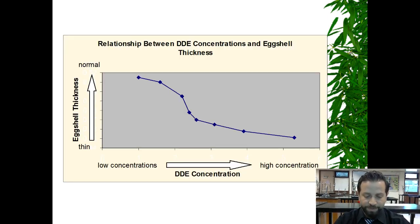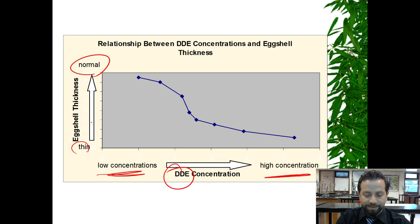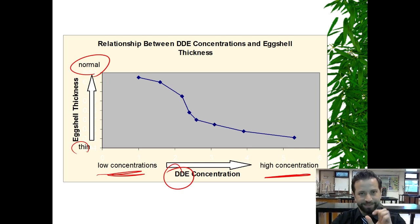On the graph, we have eggshell thickness — thin here, normal there — and DDE concentration — low concentrations here, high concentrations there. As the concentrations get higher, what's happening with the eggshell? You have data in your skeleton notes, and your task is to use graph paper to make a nice graph. Make sure it has a title, it's clear, and you use as much of the page as you can — don't make it a tiny graph.